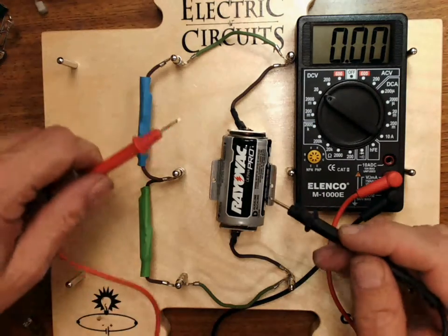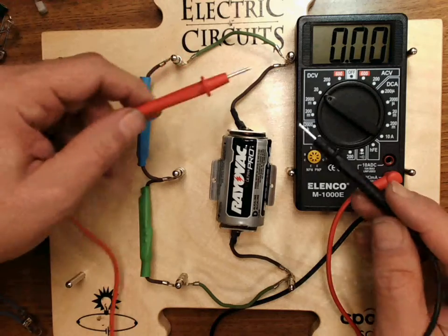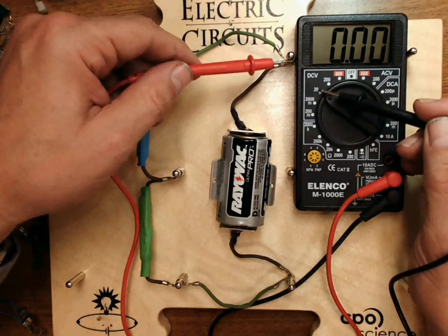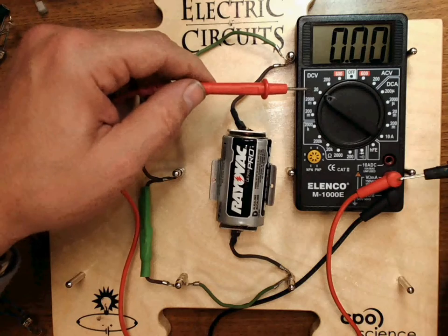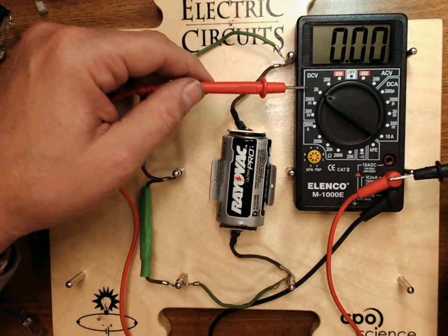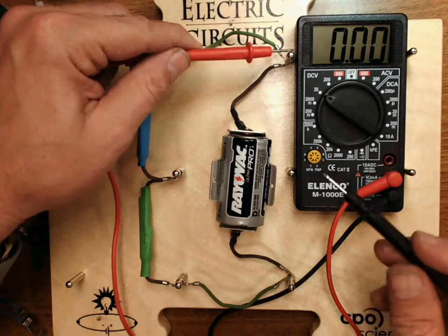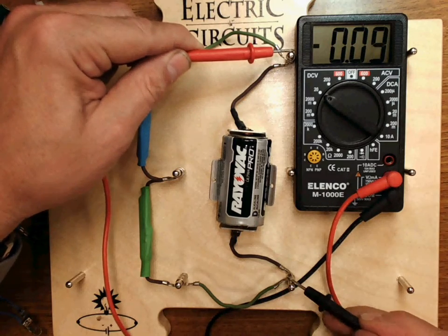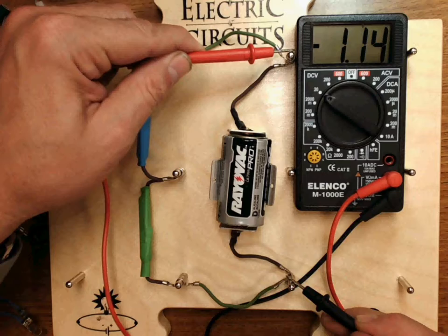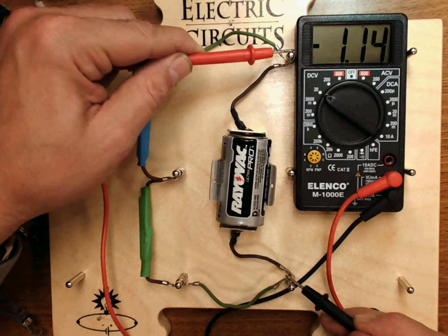If I want to measure my voltage across the battery to get my battery voltage, I have this set on DC 20 volts, and the leads are in the bottom two sections on the voltmeter. I can touch my leads on the opposite sides of the battery, and I get 1.14 volts. Obviously, this battery is getting low.